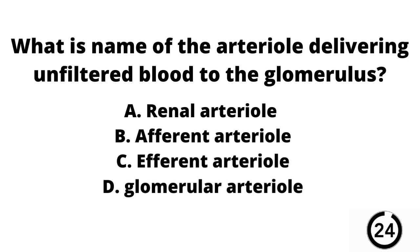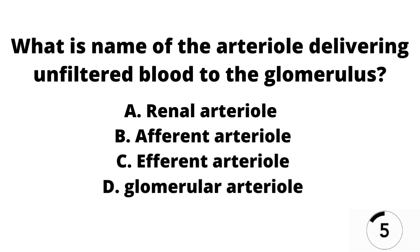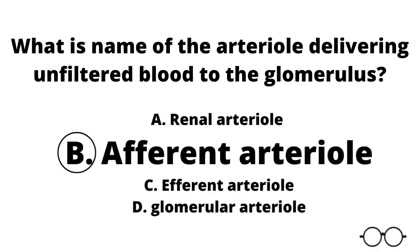Question number five. What is the name of the arterial delivering unfiltered blood to the glomerulus? A the renal arterial, B the afferent arterial, C the efferent arterial, or D the glomerular arterial? Our answer here is B — the afferent arterial is the arterial that delivers unfiltered blood towards the glomerulus.